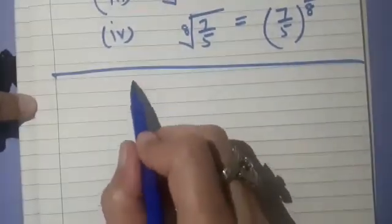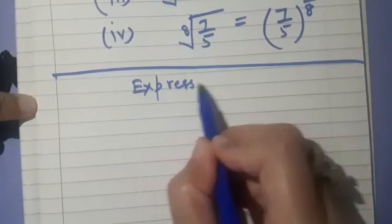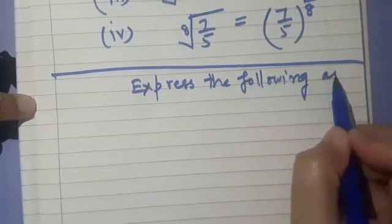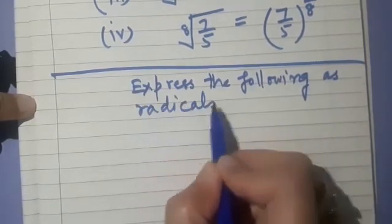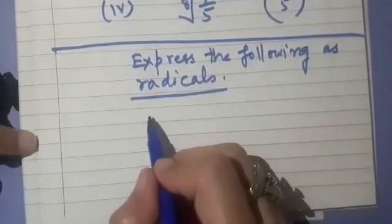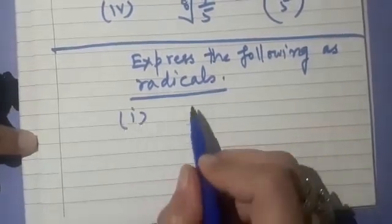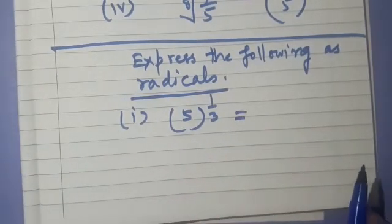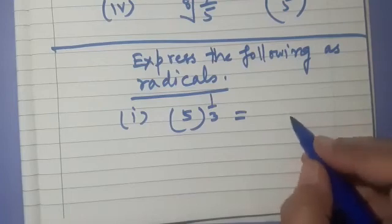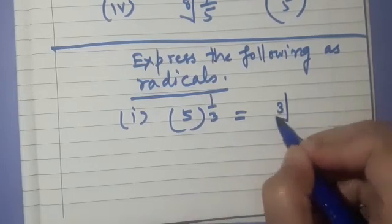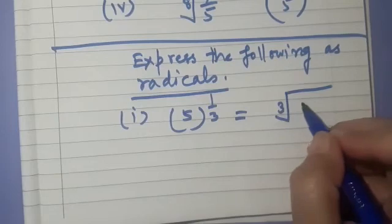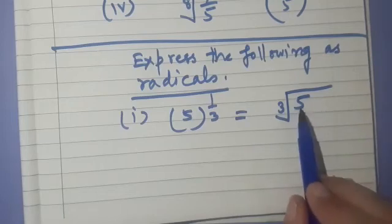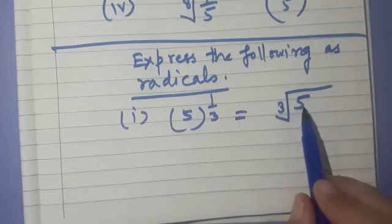Now express the following as radicals. So here we are given expressions like 5 raised to the power 1 by 3 — how do you write it in radical form? We take index 3, so this is cube root of 5, where the radicand is 5.